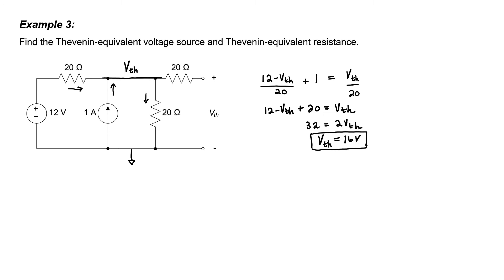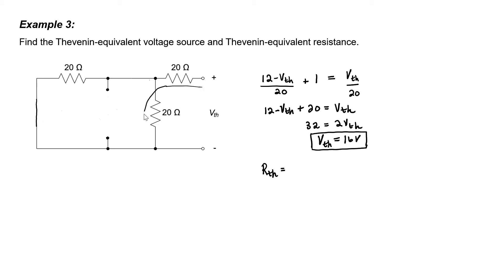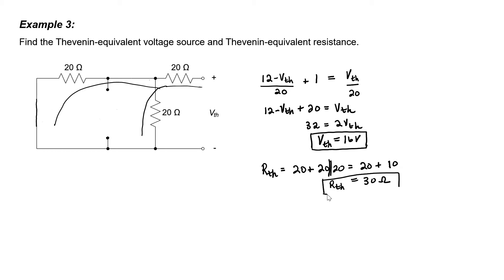For the Thevenin equivalent resistance, I need to zero out my sources. Zeroing out the current source gives an open circuit, and zeroing out the voltage source gives a short circuit. Looking back from the terminals, I see 20 ohms in series with two 20 ohm resistors that are in parallel with one another. The two parallel resistors give 10 ohms, and we're left with 30 ohms for the Thevenin equivalent resistance.